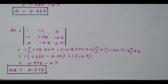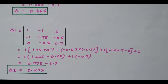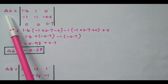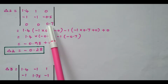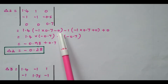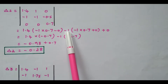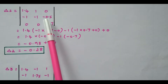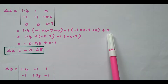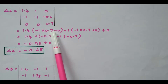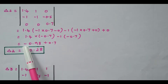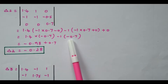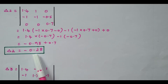Delta 2 means the second column is replaced by the current matrix. 1.4 × (-1 × 0.7 - 0) - (-1) × (1 × 0.7 - 0) = 1.4 × (-0.7) + 1 × (-0.7) = -0.98 + 0.7 = -0.28. So delta 2 = -0.28.